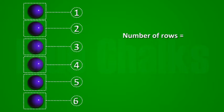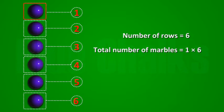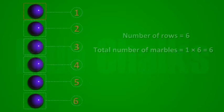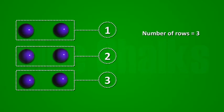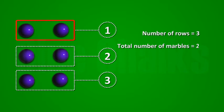One marble in each row. Number of rows is equal to six. Total number of marbles is equal to one into six is equal to six. Two marbles in each row. Number of rows is equal to three. Total number of marbles is equal to two into three is equal to six.